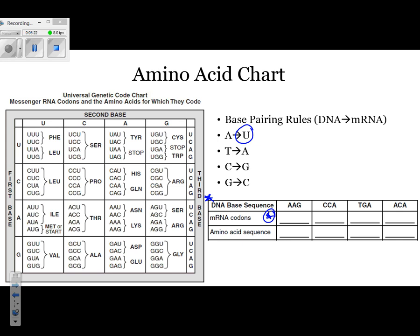Feel free to use the base pairing rules laid out above the diagram. Based on the base pairing rules — remember A goes to U — our first codon is going to be U, U, C. The next one is G, G, U. The next one is A, C, U. And the final one is U, G, U.